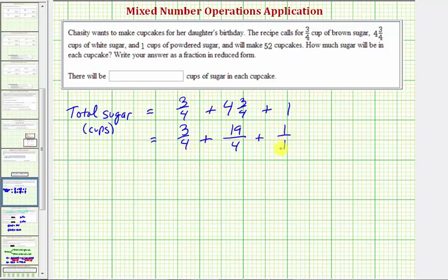Before we add the fractions though, we must obtain a common denominator, which would be four. So multiply one over one by four over four. Now we have three-fourths plus nineteen-fourths plus four-fourths.